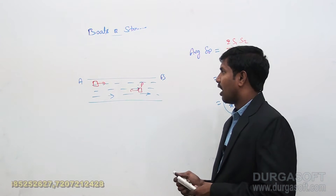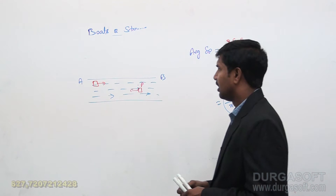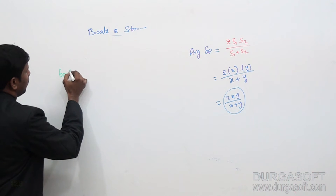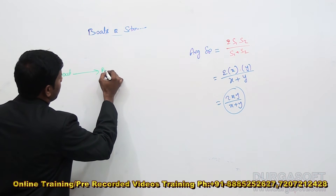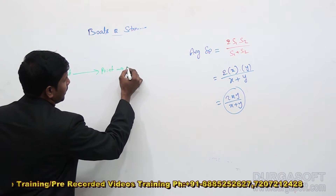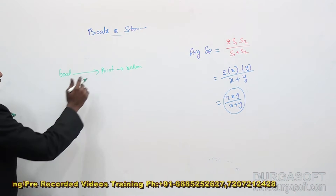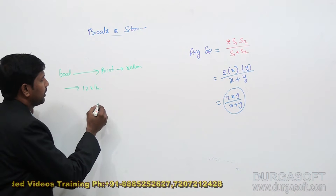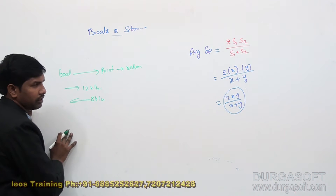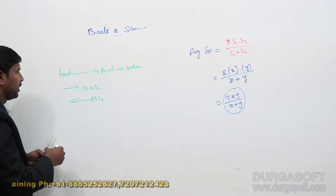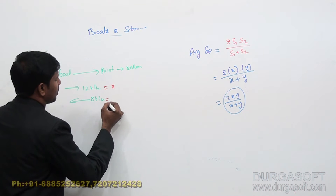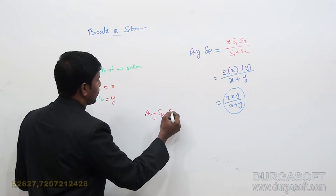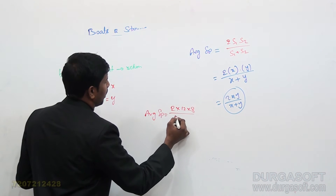Now let us see the types of questions we can expect related to this. Generally they will ask: a boat is going to a point and then returns, having 12 kilometers per hour while going and 8 kilometers per hour on return — find the average speed. Here, 12 is the downstream speed X and 8 is the upstream speed Y. So the average speed equals 2XY divided by X plus Y, which is 2 into 12 into 8 divided by 12 plus 8.